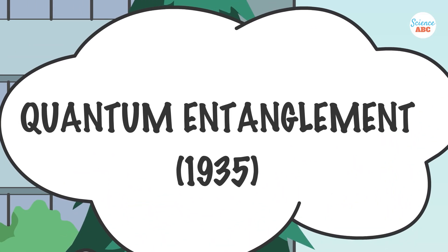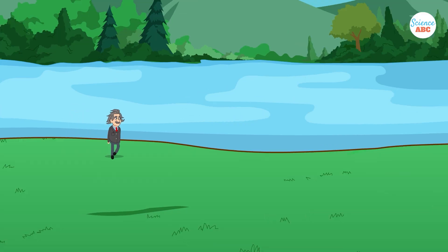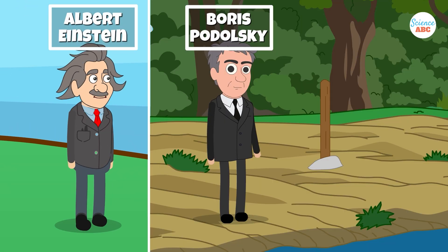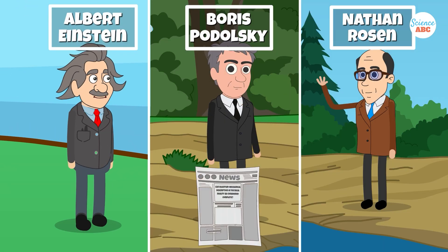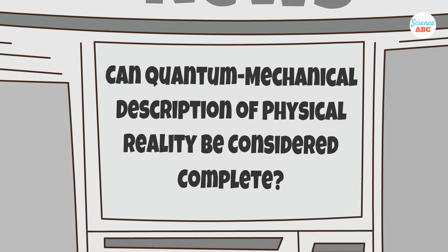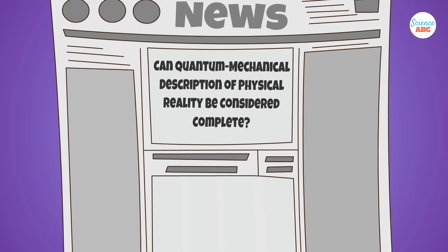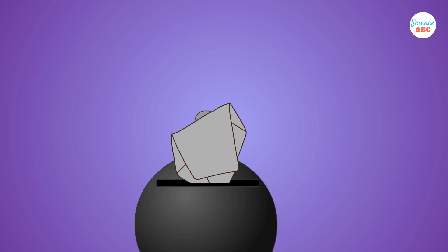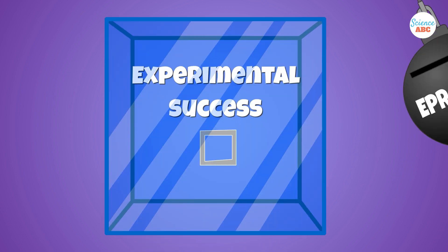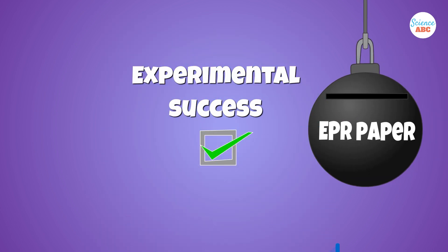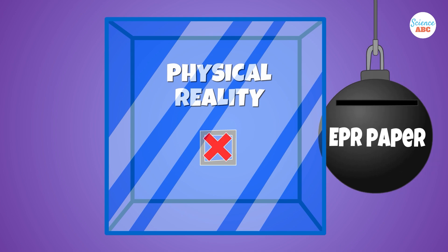The same year our story begins. That year, renowned scientists Albert Einstein, Boris Podolsky, and Nathan Rosen co-authored a paper titled Can Quantum Mechanical Description of Physical Reality Be Considered Complete? This work, now known as the EPR paper, argued that despite its experimental success, quantum mechanics didn't provide a complete description of physical reality.